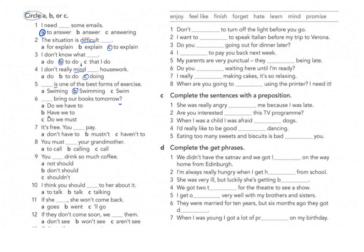Question six: 'Do we have to bring our books tomorrow?' Options B and C are not correct. We don't say 'have we to' — to make a question with 'have to', we use 'do' or 'does'. In the negative we say 'don't have to' or 'doesn't have to'. We also don't say 'do we must' — 'must' is a modal verb and forms its own question, like 'must we go now?'. So A is correct.